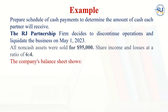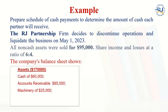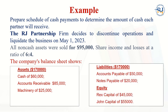I am going to explain everything with one example and will prepare the schedule of cash payment to determine the amount of cash each partner will receive. In this example, the RJ partnership firm decided to discontinue operations and liquidate the business on 1st of May 2023. All non-cash assets were sold for $95,000 and the profit sharing ratio is 60 to 40 among the two partners. The balance sheet shows cash of $60,000, accounts receivable $85,000, machinery $25,000, accounts payable $50,000, notes payable $20,000, Rex capital $45,000, and John capital $55,000.